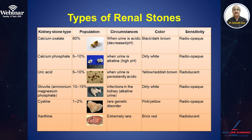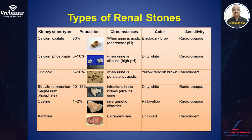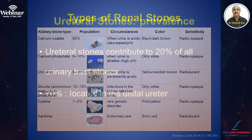10 to 15 percent of stones are struvite — triple phosphate, ammonium magnesium phosphate stones. Recurrent urinary infection is a common predisposing factor, where urinary pH is alkaline; they are dirty white in color. Cystine stones are radio-opaque, known to occur in a rare genetic disorder called cystinuria, accounting for 1 to 2 percent of stones and are pink or yellow in color. Xanthine stones are extremely rare, brick red, and radiolucent.